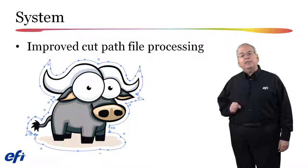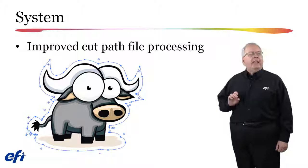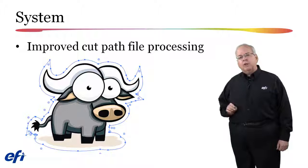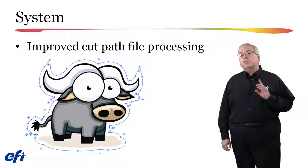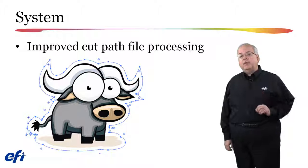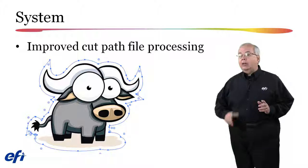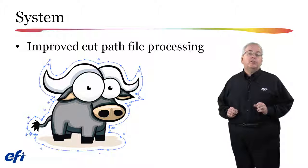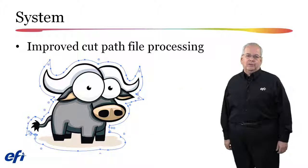The Fiery 6.4 update offers an additional benefit when printing PDF files that contain a cut path. In the past, these files were always processed using the PostScript engine. With the new upgrade, if you select the PDF Print Engine in your workflow, the image portion of the file will now be processed using this engine and only the cut path will be processed using the PostScript engine. This enhancement is available when using either the Windows or the Mac Server.